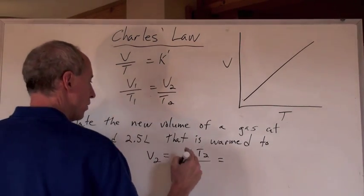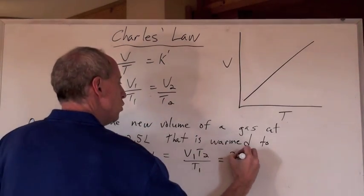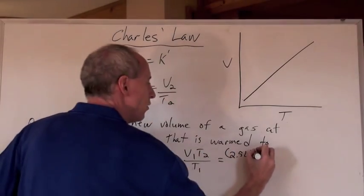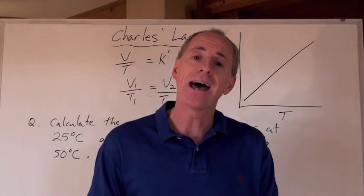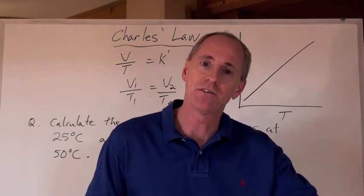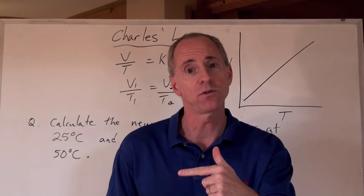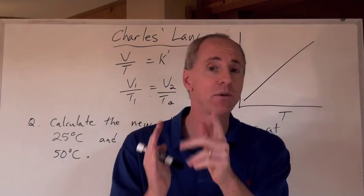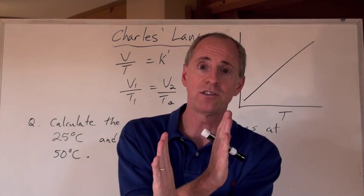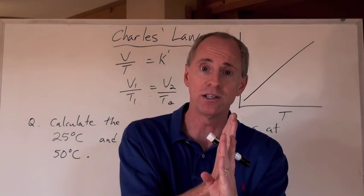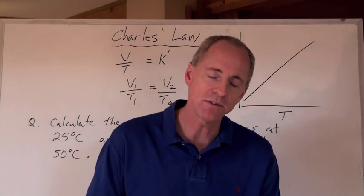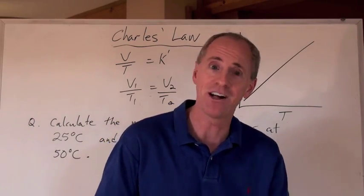Now we plug in the numbers. What's the initial volume? The initial volume is 2.5 liters. What is the temperature of that 2.5 liters? 25 degrees Celsius. Now, add 273 to degrees Celsius to get Kelvins. Because remember, 0K is negative 273 degrees Celsius. And by the way, they go up proportionally. So one increase in degrees Celsius is one corresponding increase in terms of Kelvins. So always add 273 to your degrees Celsius to get your Kelvins.